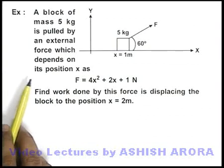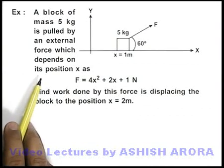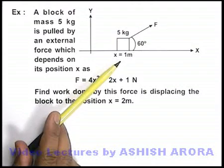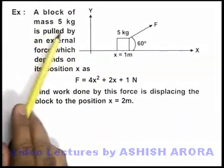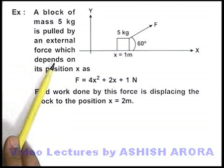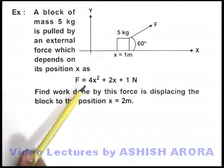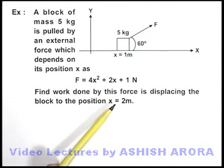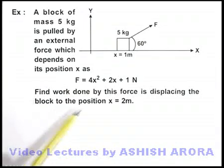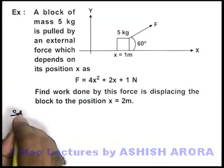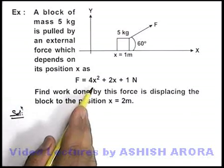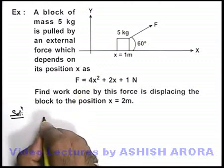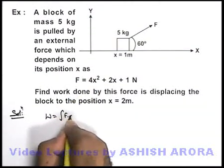Let's see an example for calculation of work by a variable force. A block is placed on the x-axis at x equal to 1 meter. A block of mass 5 kg is pulled by an external force which depends on its position as 4x² + 2x + 1 newtons. We are required to find the work done by this force in displacing the block to the position x equal to 2 meters. Since the force is a function of position x, we can directly write the work done as integration of F·dx.